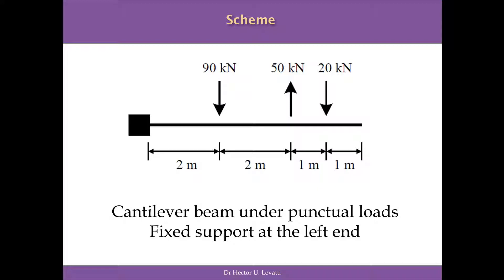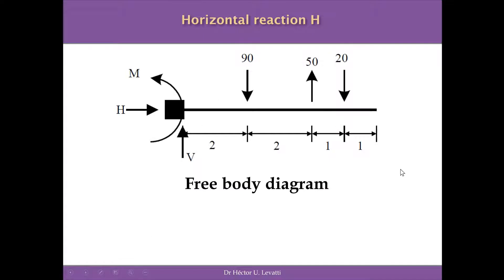Two of them are negative, 90 kN and 20 kN, and one of them is positive because it's going up following our conventions. To resolve a problem like this, we need to introduce the directions of the reaction we expect to have depending on the supports. Because it's a cantilever beam, we expect to have a horizontal reaction H, a vertical reaction V, and a reactive moment M.